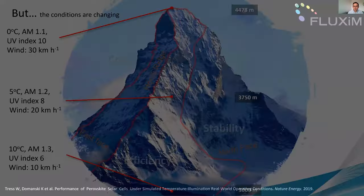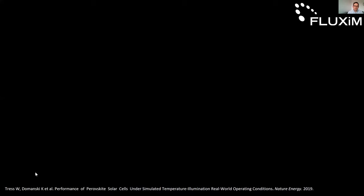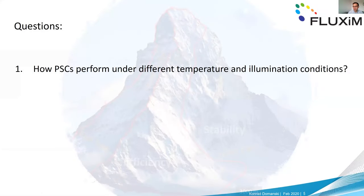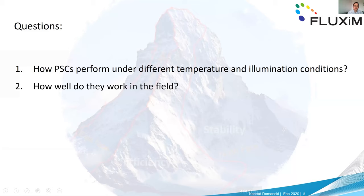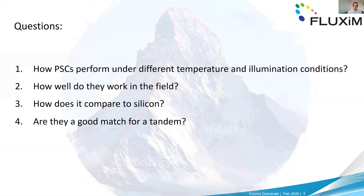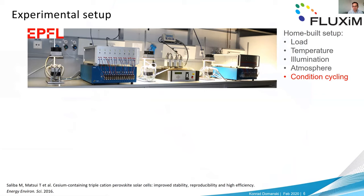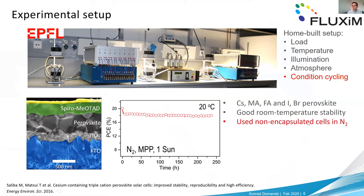With that in mind, we asked: how do perovskite solar cells perform under different temperature and illumination conditions, how well do they work in the field, how do they compare to silicon, and are they a good match for a tandem? We built a setup at EPFL where we could control load, temperature, illumination, and cycle conditions. We used our workhorse device — the cesium methylammonium formamidinium iodide-bromide perovskite triple cation — because it was very reproducible and gave good room-temperature stability.